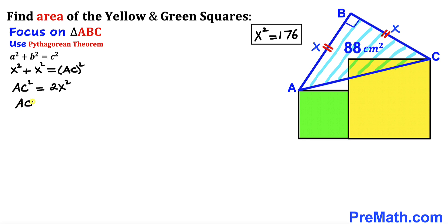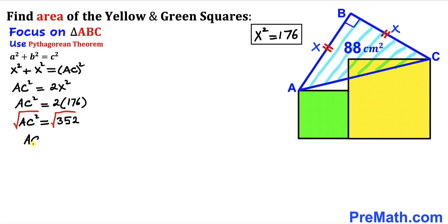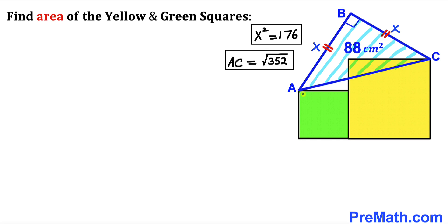Substituting gives AC² = 2 × 176, which simplifies to AC² = 352. Taking the square root of both sides, AC = √352.